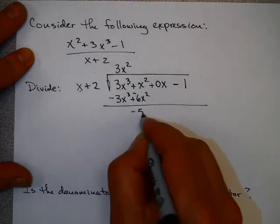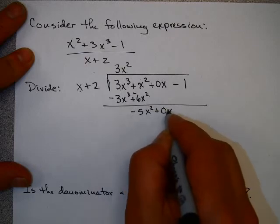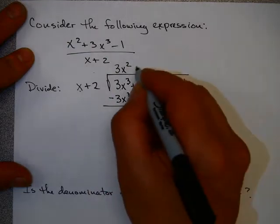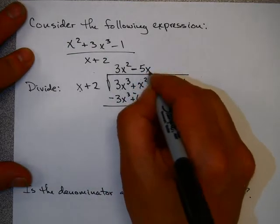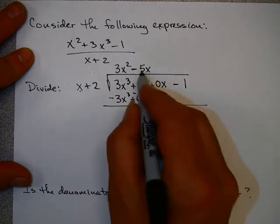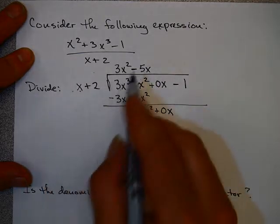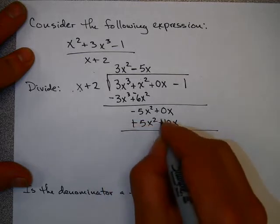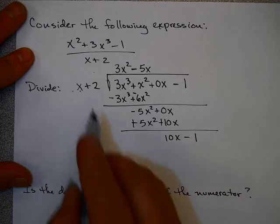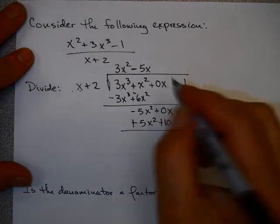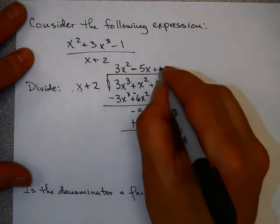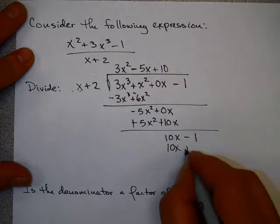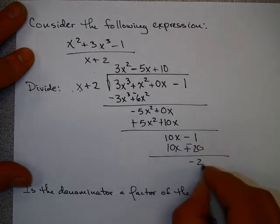Okay. What do you multiply x by to get minus 5x squared? That would be minus 5x. Minus 5x times x is minus 5x squared. Minus 5x times 2 is minus 10x. Change the signs. Get 10x minus 1. What do you multiply x by to get 10x minus 1? That would be 10. 10 times x is 10x, and 10 times 2 is 20. When you subtract here, you do not get 0.